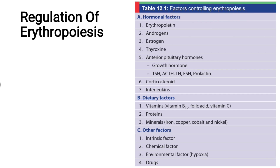Factors controlling erythropoiesis are mainly divided into three major factors: hormonal factors, dietary factors, and other factors. Hormonal factors include erythropoietin, androgens, estrogens, thyroxine, anterior pituitary hormones such as growth hormone, TSH, ACTH, LH, FSH, and prolactin, corticosteroids, and interleukins. All these are stimulatory except estrogen — females have fewer RBCs than males because estrogen inhibits erythropoiesis. Erythropoietin is the hormone that mainly regulates erythropoiesis; it is produced mainly by the interstitial cells in the peritubular capillary bed of the kidney.